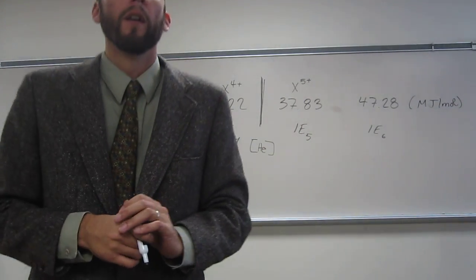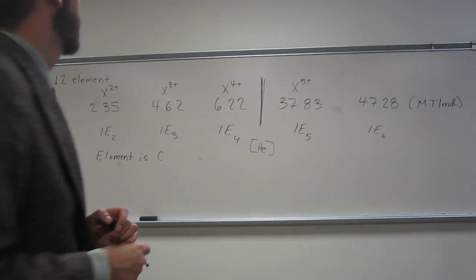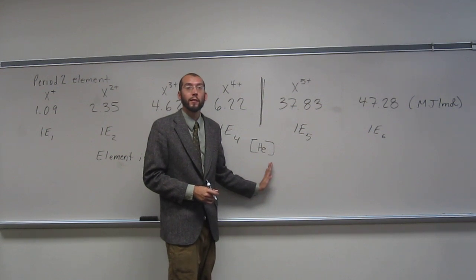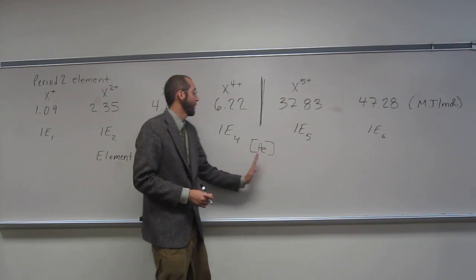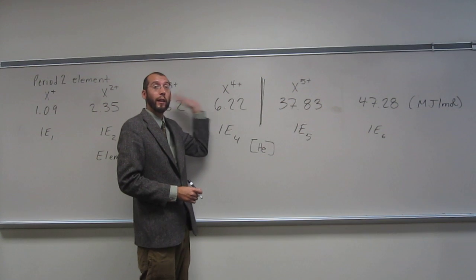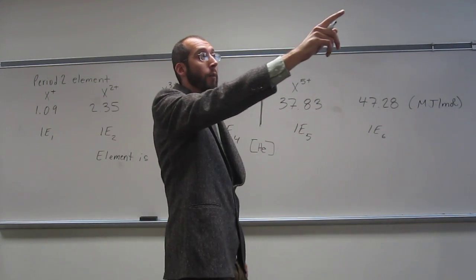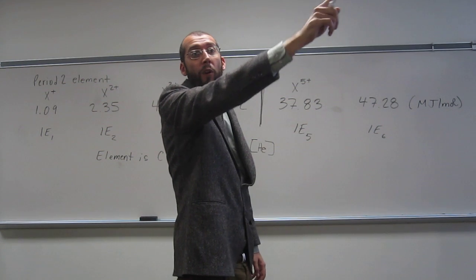So what exactly determines where the element is? It's wherever the big jump is. That's where the noble gas is. And so you just count from that how many electrons you took away. So helium, right? Plus 1, 2, 3, 4 is carbon.